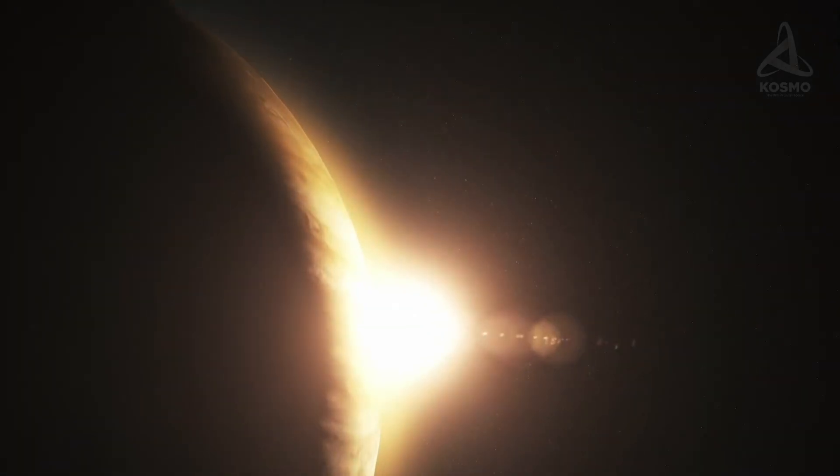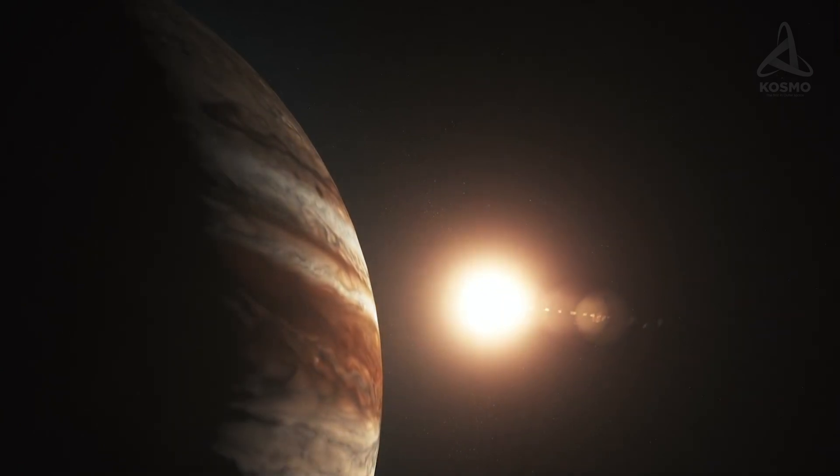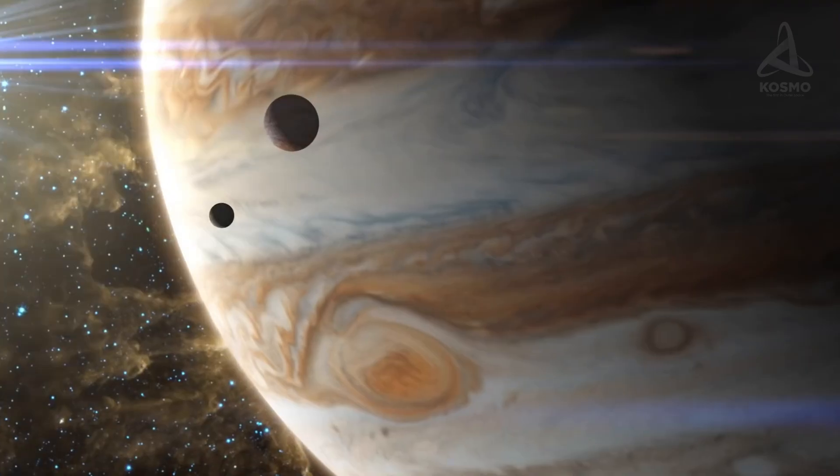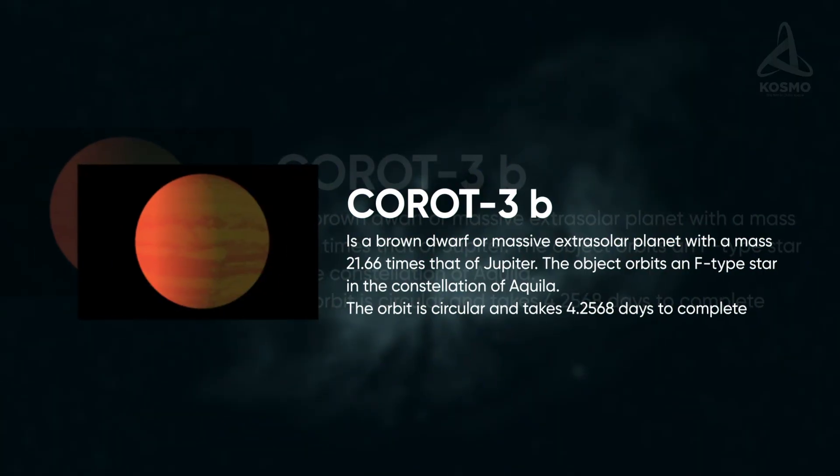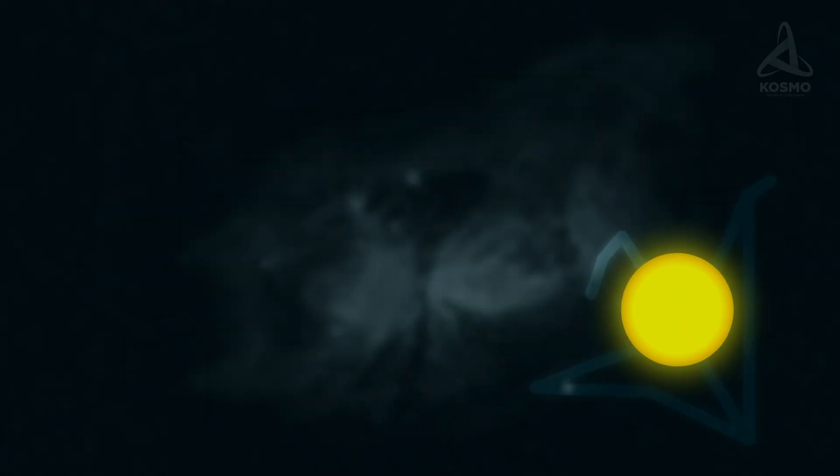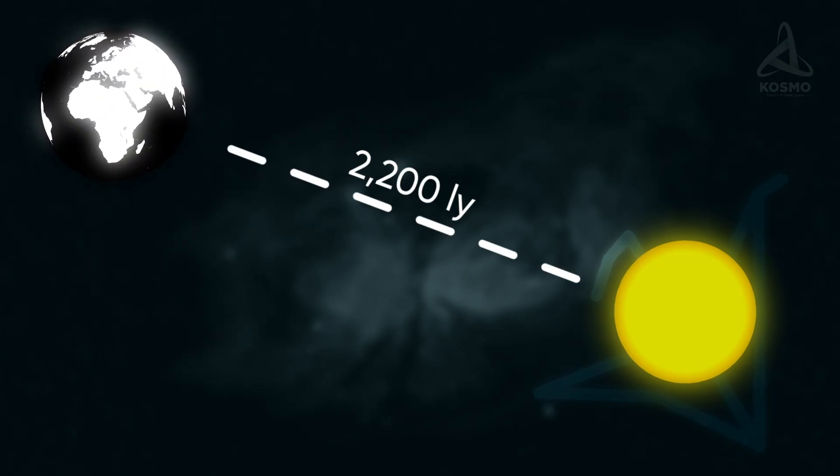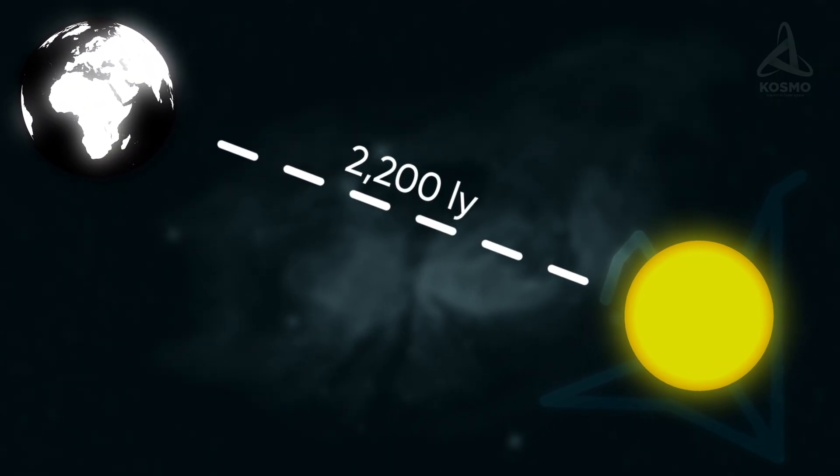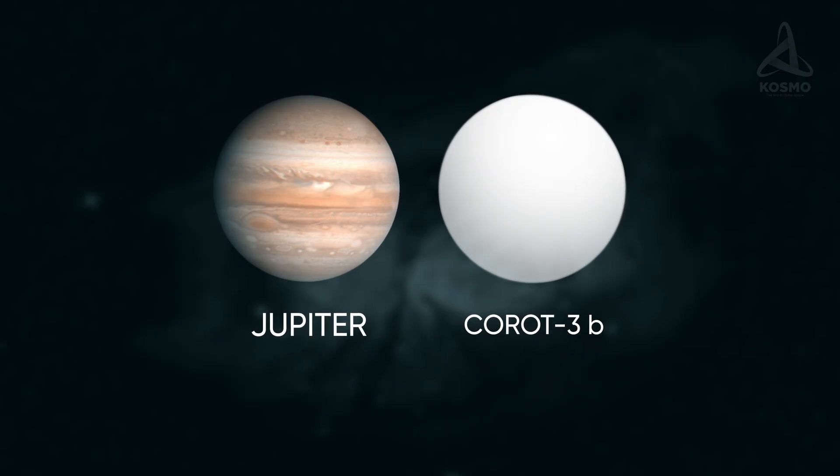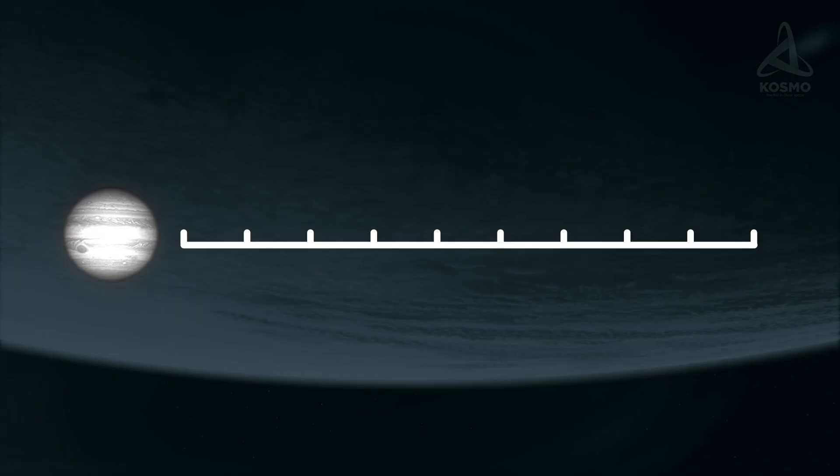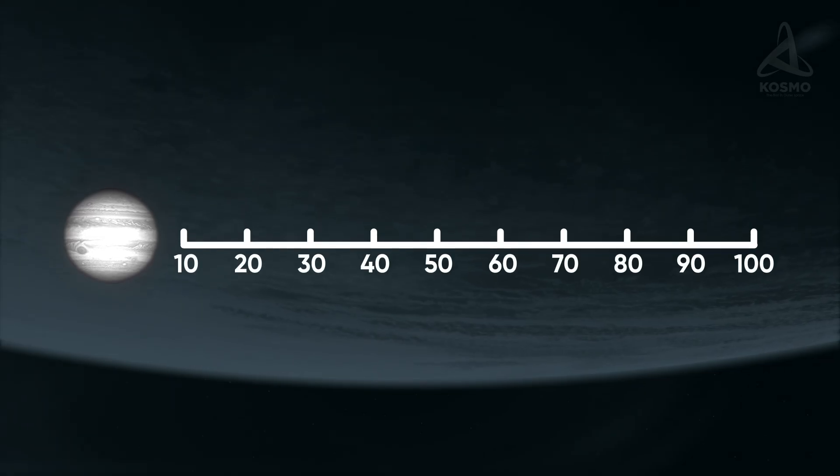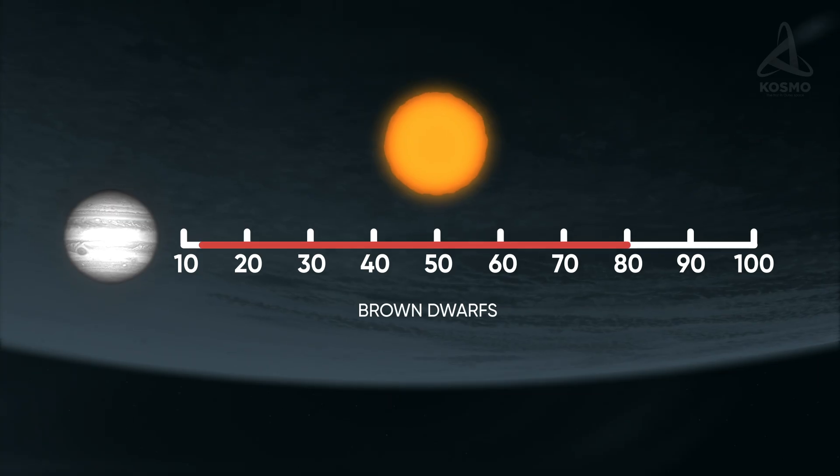A brown dwarf's dimensions are usually comparable to those of Jupiter, while its mass is several dozen times that of Jupiter. For example, the object Choro 3b in the constellation Aquila, about 2200 light years from the Earth, is similar to Jupiter in its diameter, but is 22 times heavier. A space object qualifies to be called a brown dwarf if its mass is approximately 12 and a half to 80 times that of Jupiter.